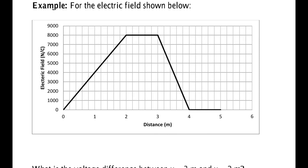A Newton per coulomb — I could multiply the top by a meter and divide the bottom by a meter. That'd be a Newton·meter per meter·coulomb. But a Newton·meter is a Joule, so it'd be a Joule per coulomb·meter. But a Joule per coulomb is a Volt, so the electric field's units are Newtons per coulomb, but they're also Volts per meter. When you take a Volt per meter and multiply by meters to get the area, you end up with Volts — the correct unit.